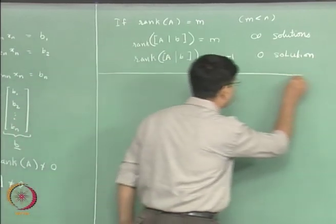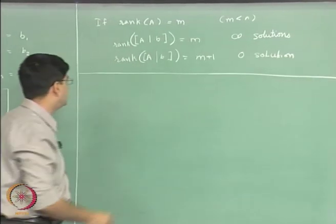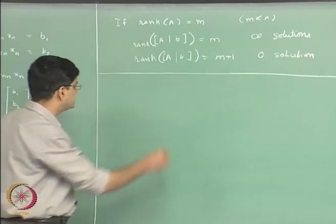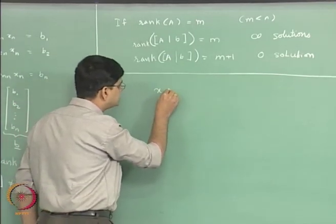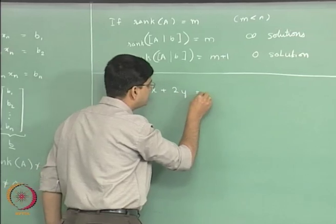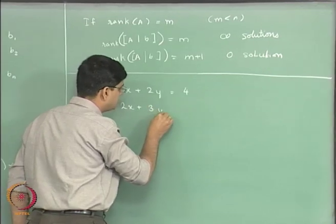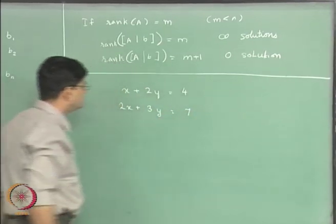The two-dimensional example that we took in the last minute of the previous lecture was x plus 2y equal to 4 and 2x plus 3y equal to 7.